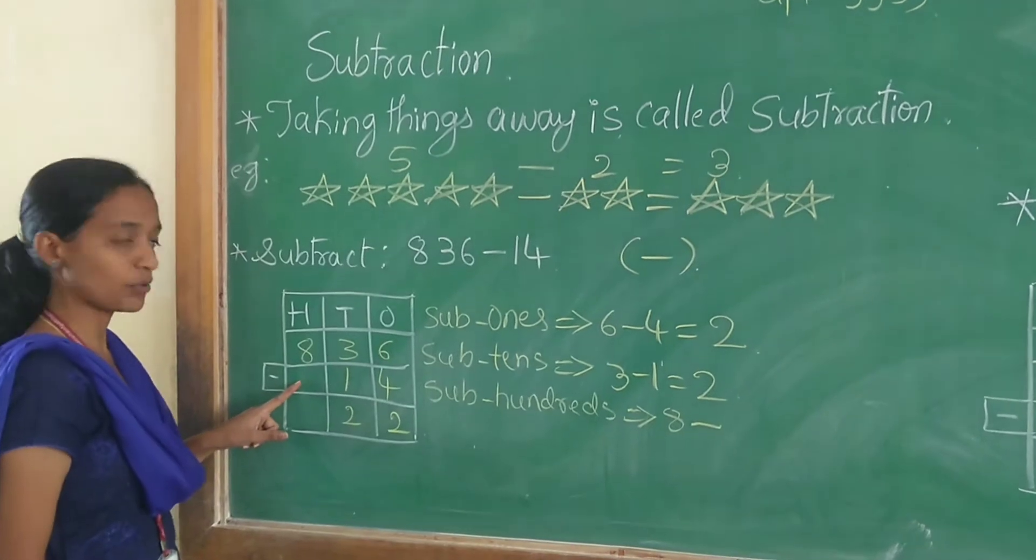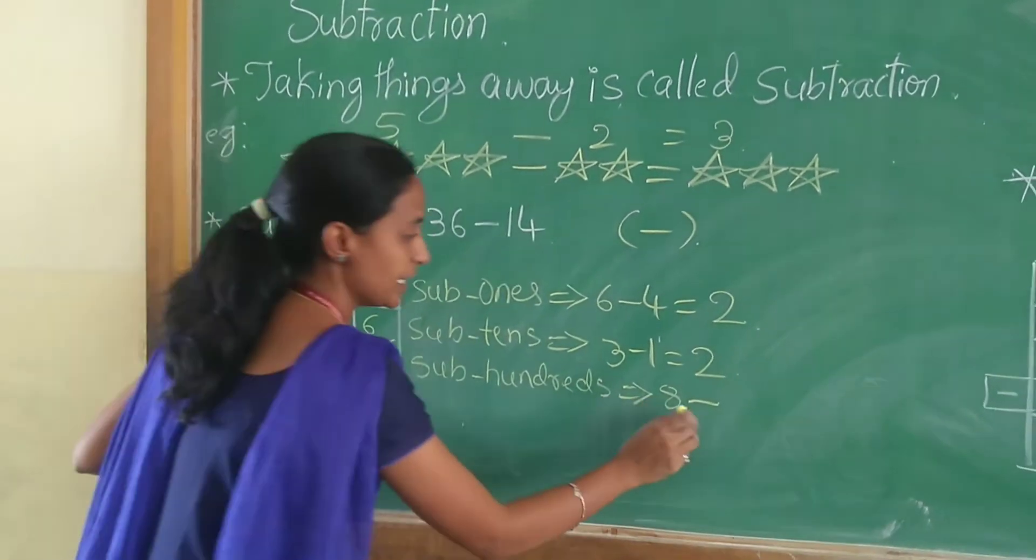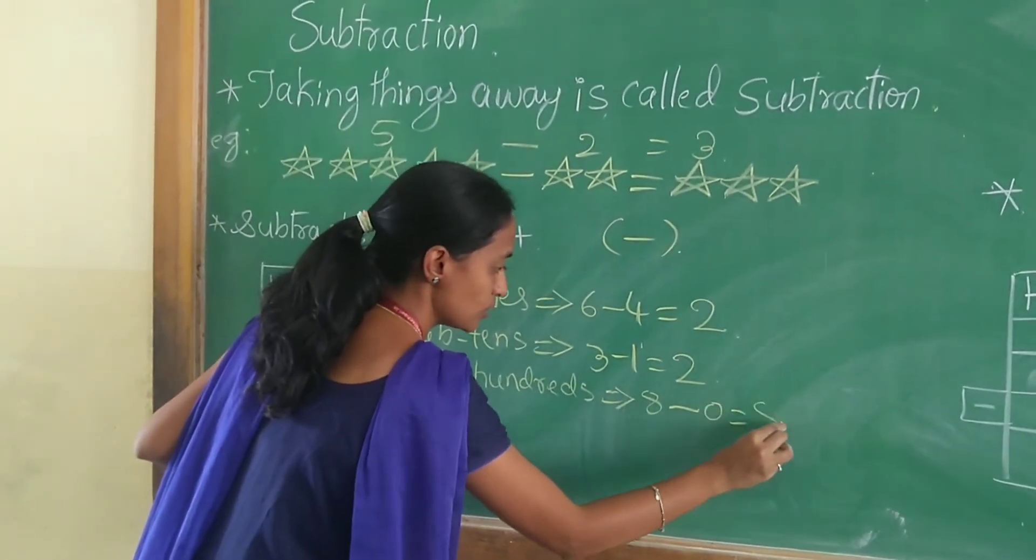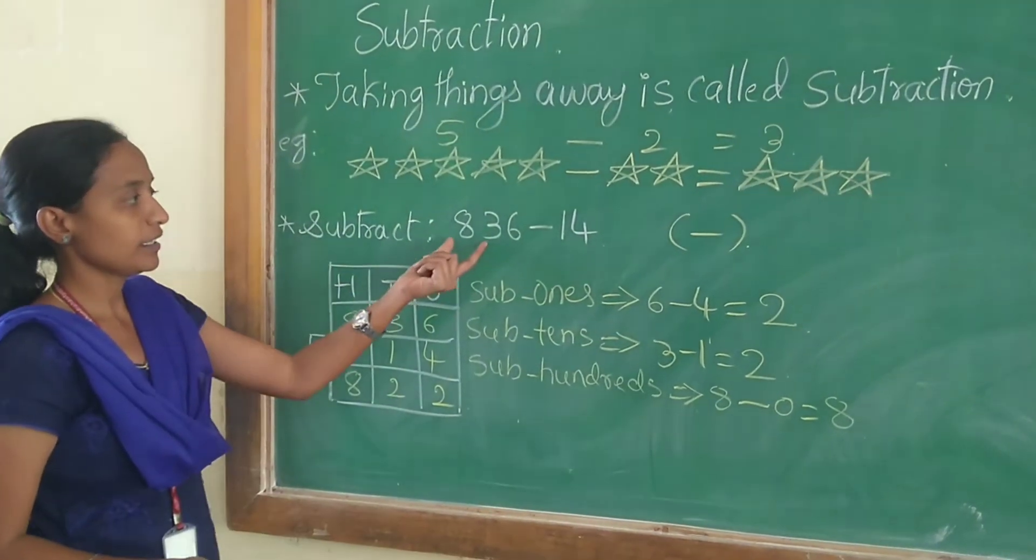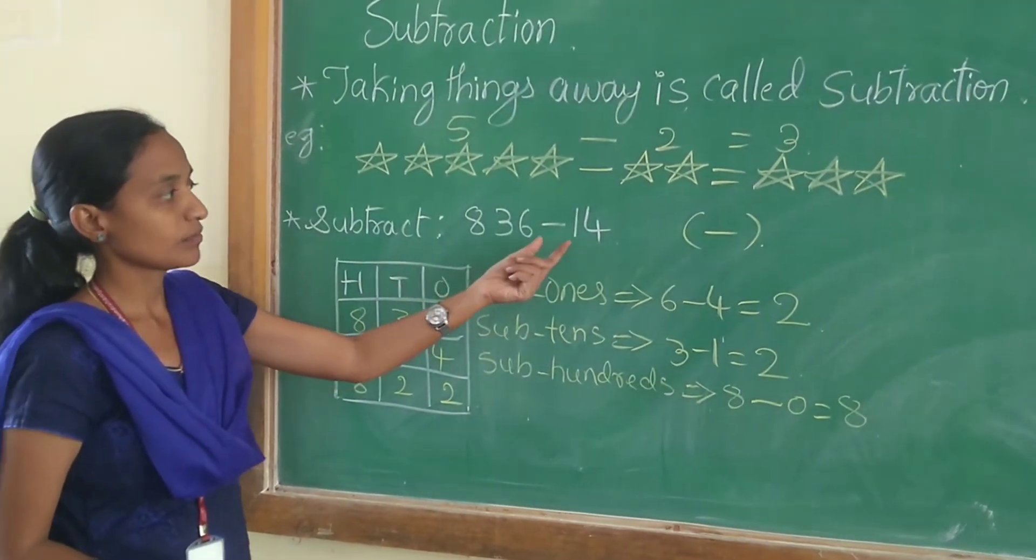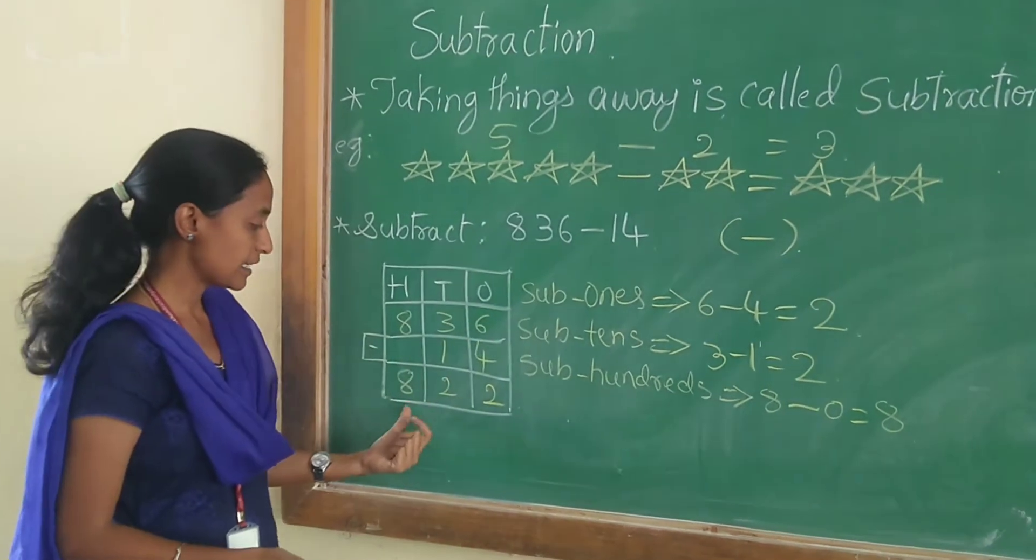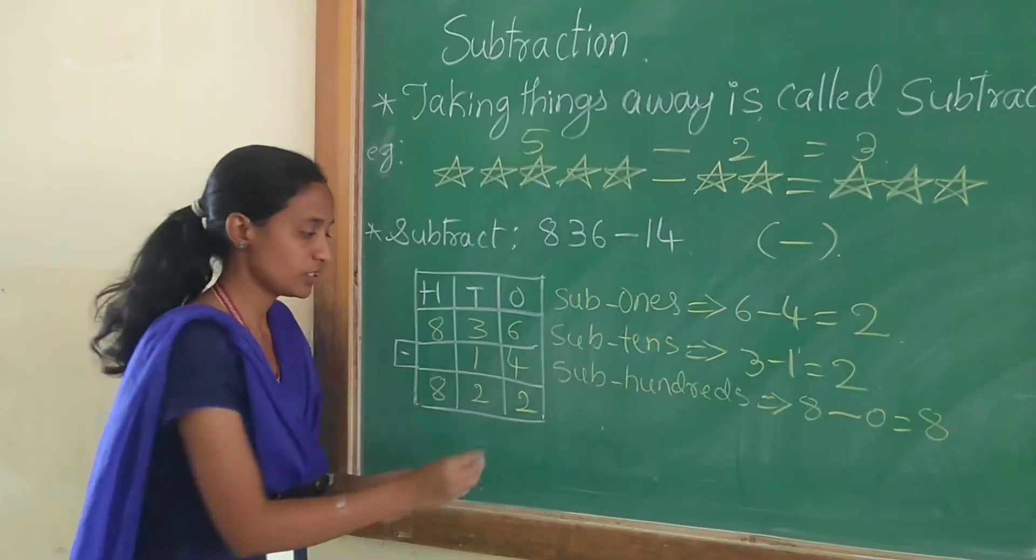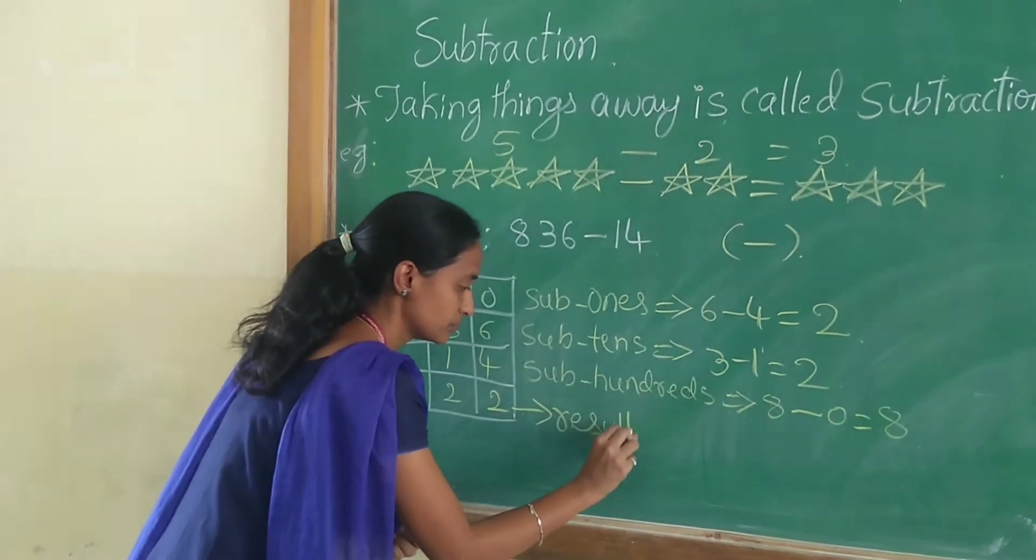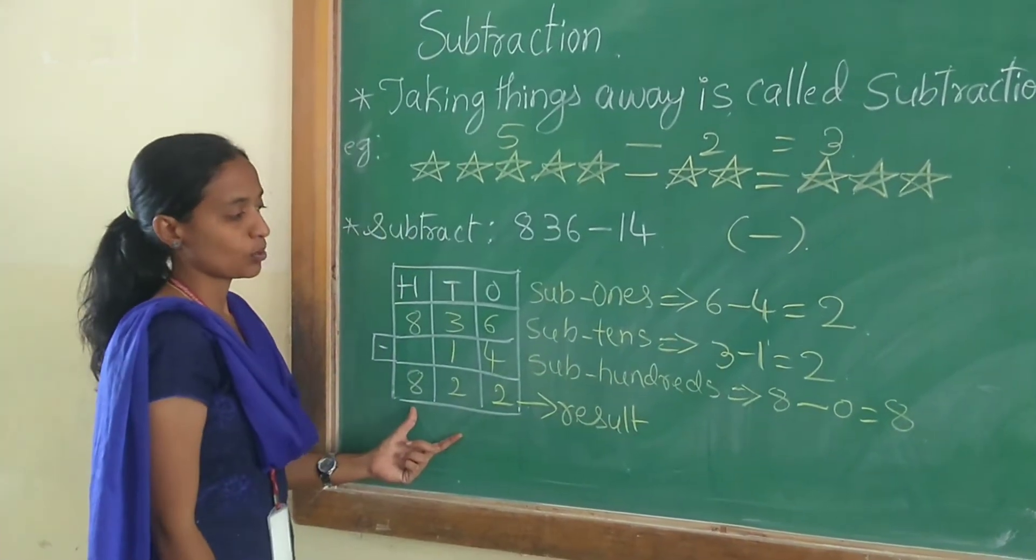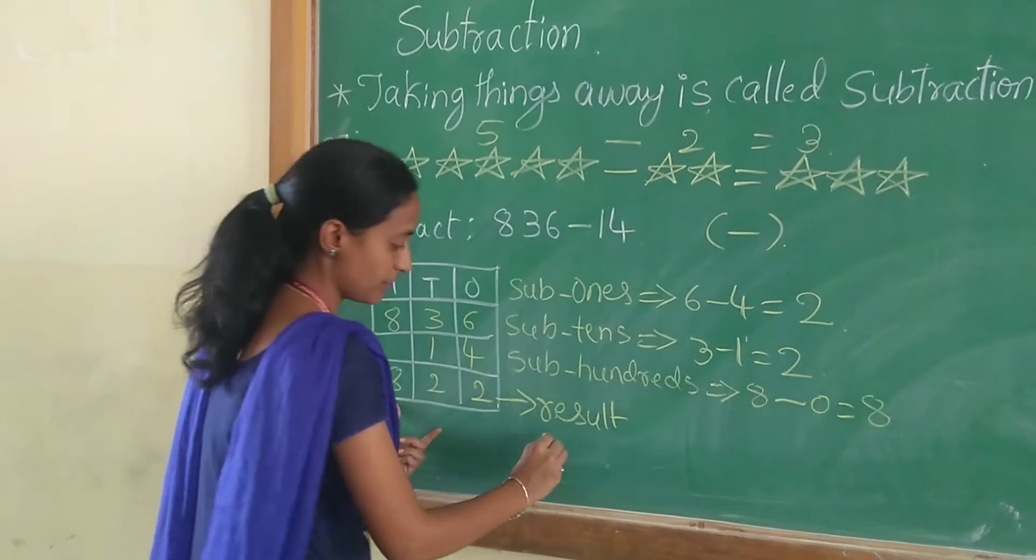Subtract 100s. Here we have no digit, so you have to assume it as 0. 8 minus 0 is equal to 8. So when you subtract 836 minus 14, you will get 822. This is our result. The result obtained is called difference.